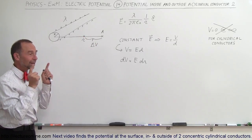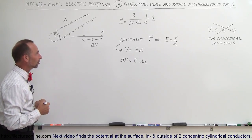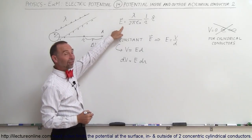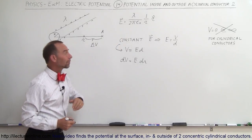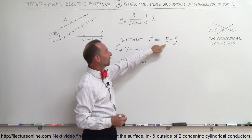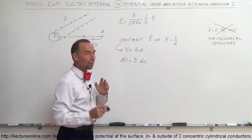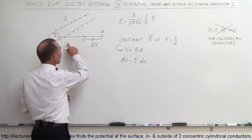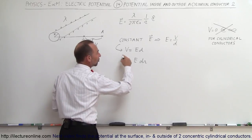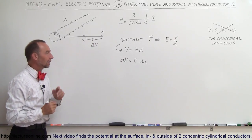All we can do is calculate the potential difference between two points outside the cylindrical conductor. For a cylindrical conductor, we know that the electric field outside the conductor is given by a known expression. If we had a constant electric field, the relationship between E and V gives us V equals E times d. But since the electric field diminishes with distance and is therefore not constant, we're going to use the differential relationship between the difference in potential and the electric field.